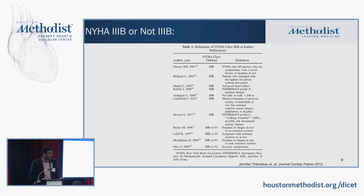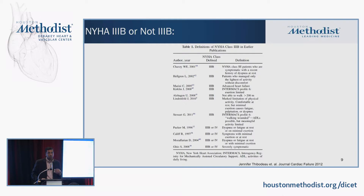Patients who have class 3A are comfortable at rest but less than ordinary activity causes symptoms. Class 3B patients are comfortable at rest but minimal exertion causes symptoms. This is vague and subjective — how do you really quantify these things? With the LVAD trials, we are coming to some consensus. You focus on ADLs: if patients are not able to shower, dress, or make coffee without getting short of breath, they are really class 3B.